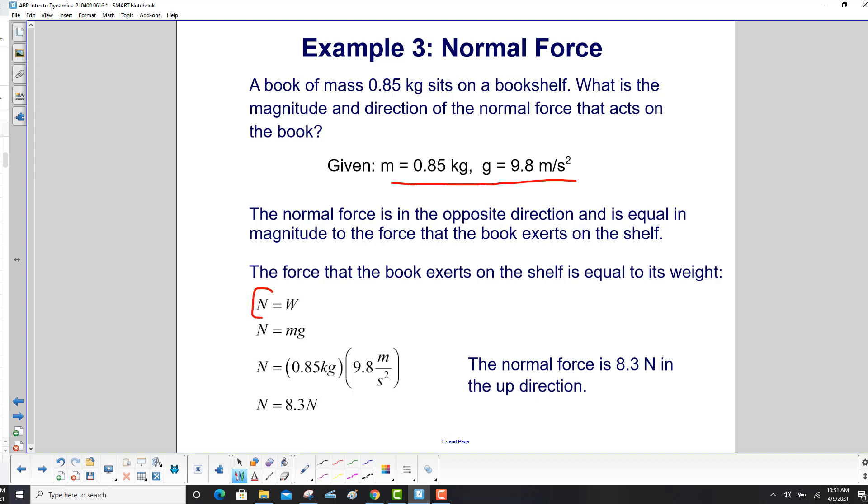So we have the normal force is equal to the weight. Normal therefore is just mg. So we put in our m, put in our g, and we find a force of 8.3 newtons and the direction, it's in the up direction supporting the book.